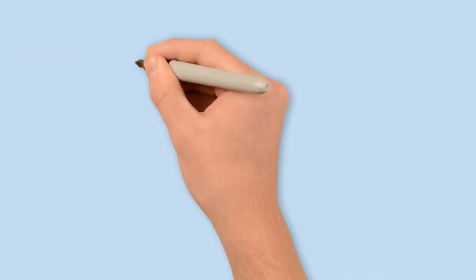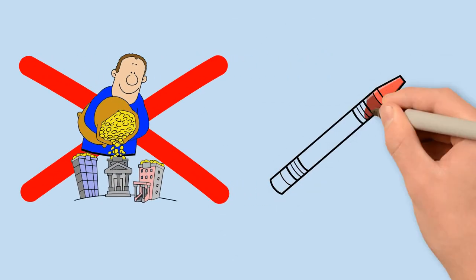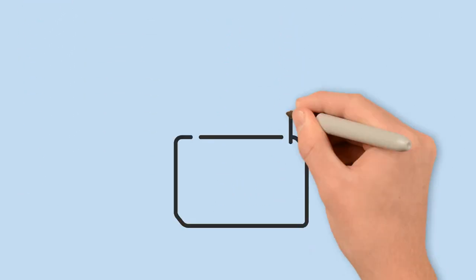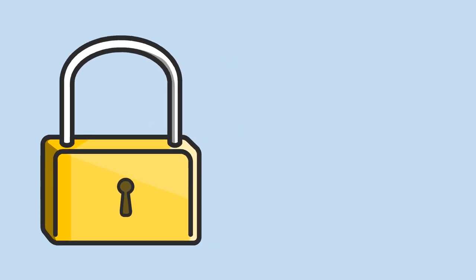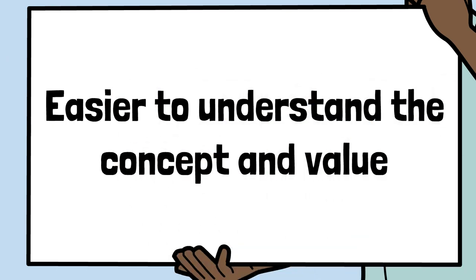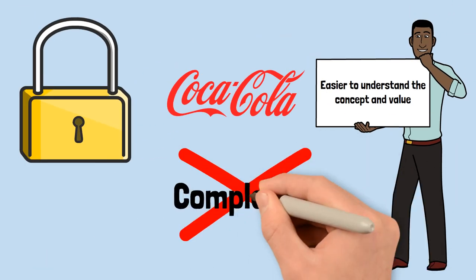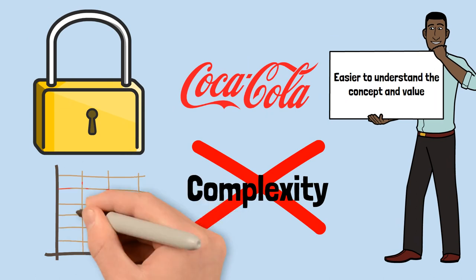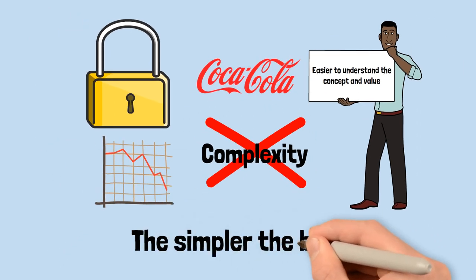Number 2: Keep it simple. Never invest in any idea you can't illustrate with a crayon. The secret to successful investing lies in the ability to understand the value of a company, and the simpler it can be explained, the easier it is for others to grasp the concept and see the value. Don't let complexity be the downfall of your investment portfolio; the simpler the better.